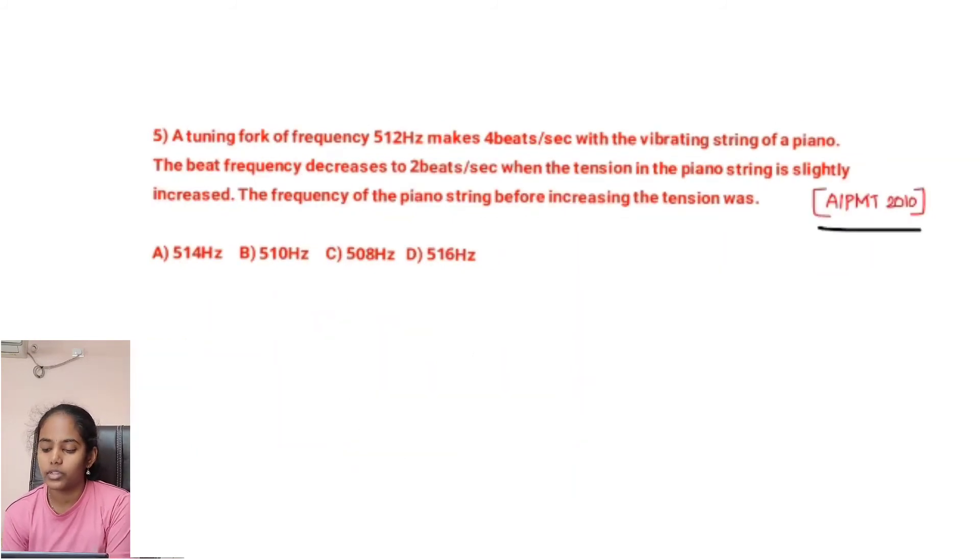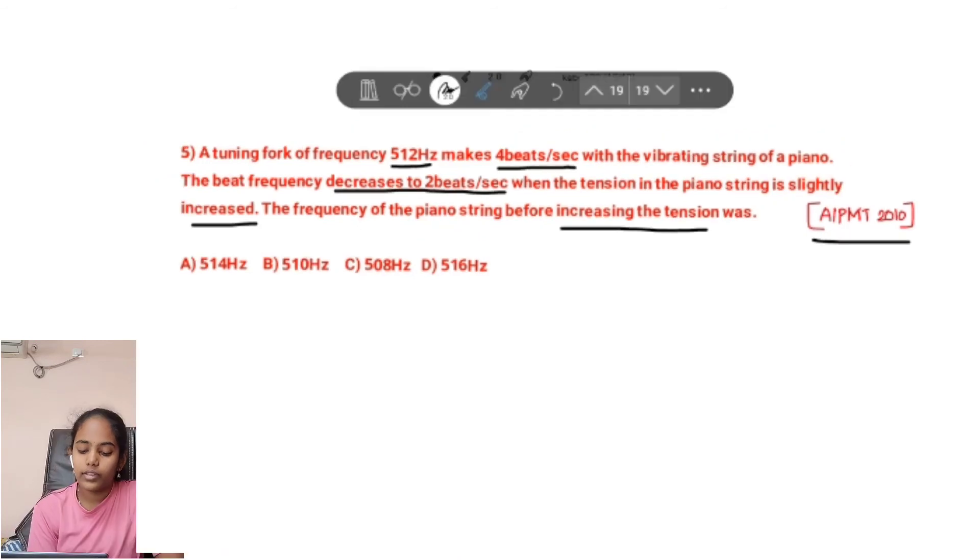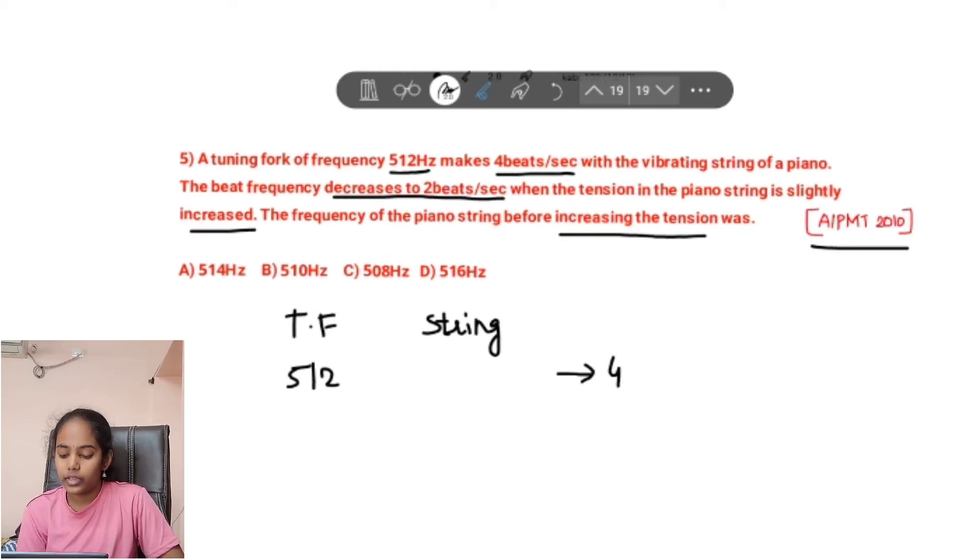Now coming to the fifth question. It is given in AIPMP 2010. A tuning fork of frequency 512 hertz makes 4 beats per second with the vibrating string of a piano. The beat frequency decreases to 2 beats per second when the tension is slightly increased. The frequency of the piano string before increasing the tension was.